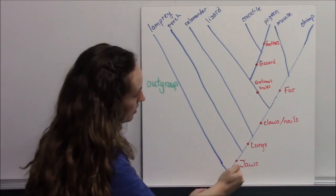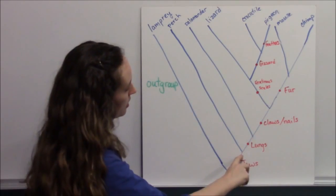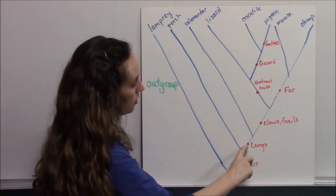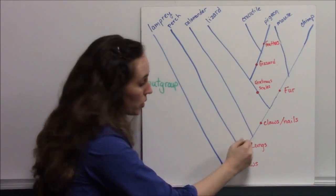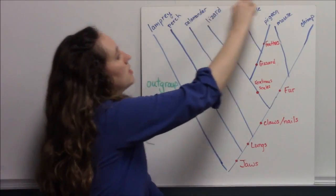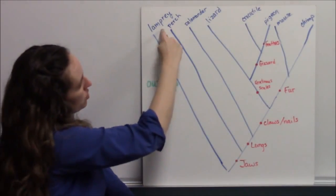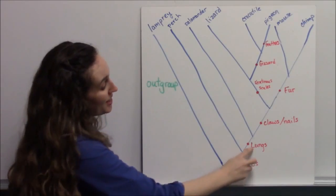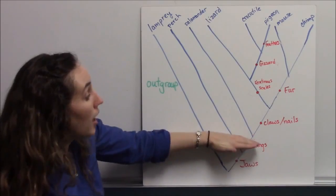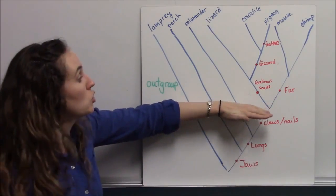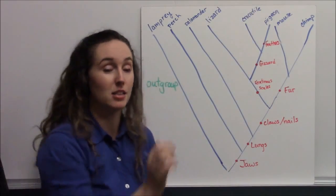And then at some point, this lineage branched. And now all the organisms here—lungs was the new derived trait. And now all organisms, salamanders through chimps, all have lungs. Perch, well, they have jaws, but they don't have lungs. So they stay here. And you can see, as you go through time, remembering that time moves up the tree, different traits are derived, which result in different lineages at different nodes.